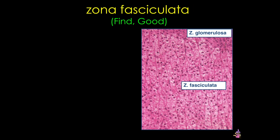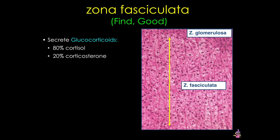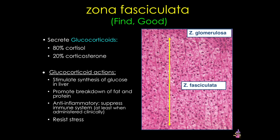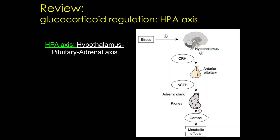Our second zone is the zona fasciculata, or 'Find Good.' The cells here are found in long straight cords of large cuboidal cells, and this zone produces glucocorticoids, primarily cortisol and corticosterone. These hormones increase blood glucose levels, stimulate gluconeogenesis in the liver, and can have a general anti-inflammatory effect. Secretion by the zona fasciculata is regulated by the classic feedback loop — this is the HPA axis, or hypothalamus-pituitary-adrenal axis.